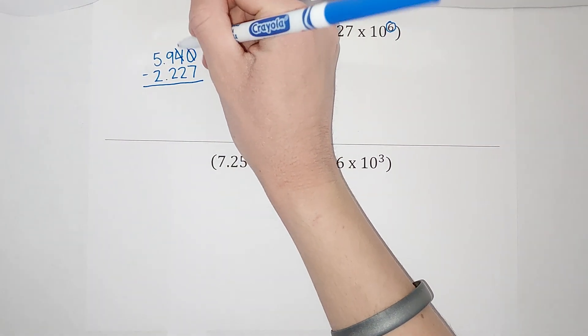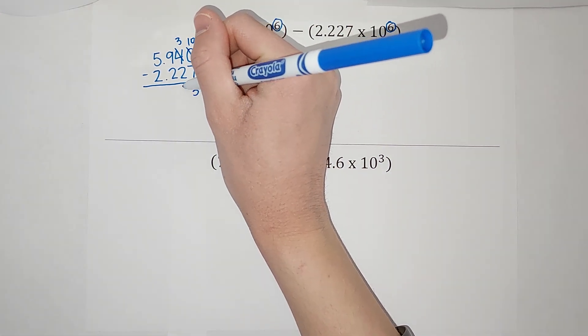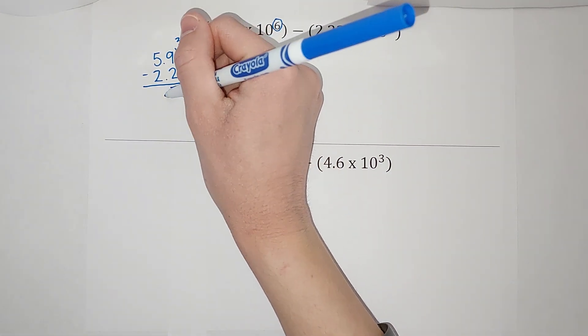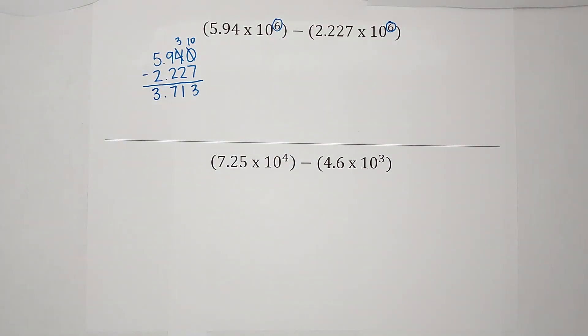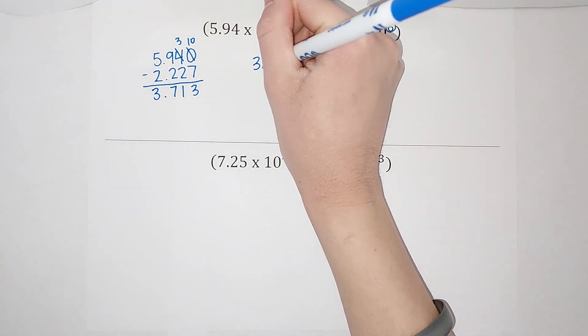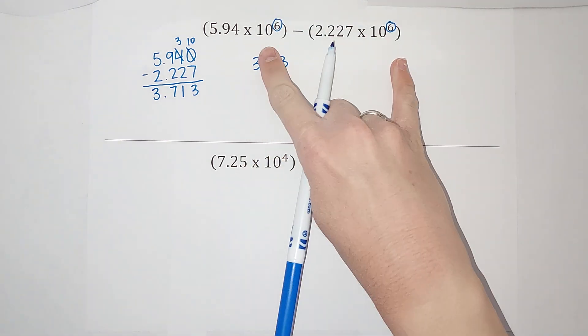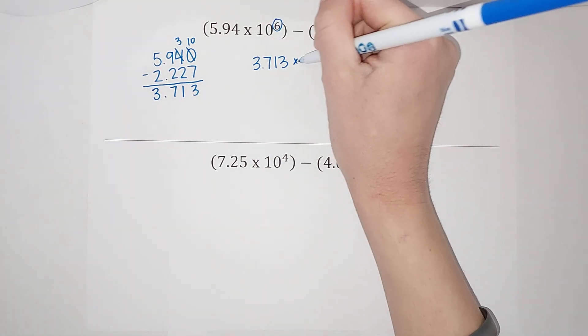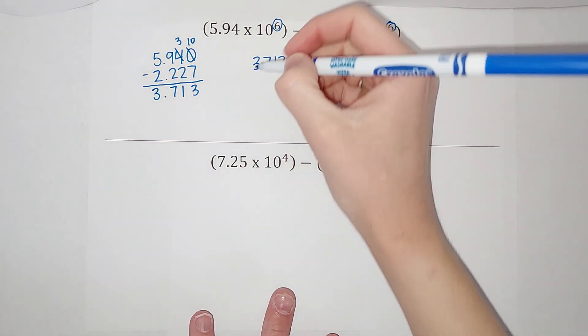Now I'm going to borrow. I'm just subtracting these. So I've got 3.713 when I subtract those. So 3.713 times 10 to the sixth power. And that is my answer.